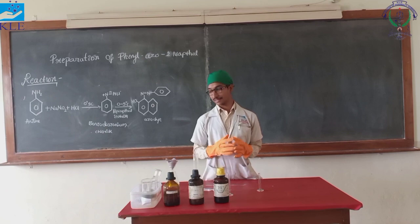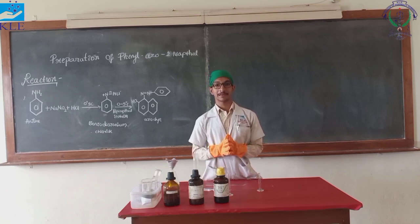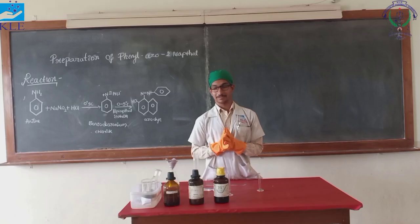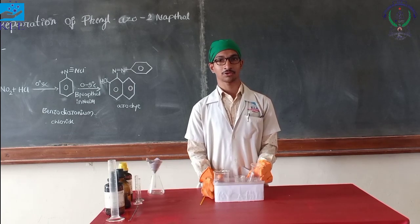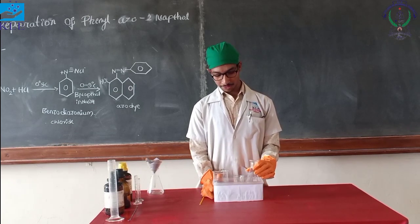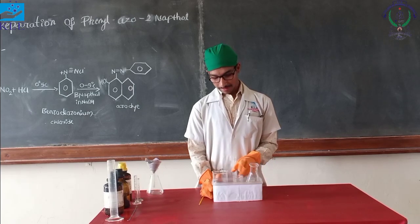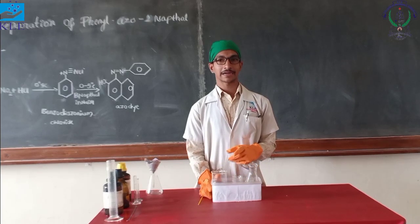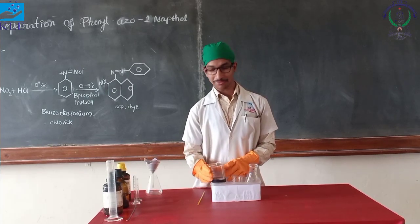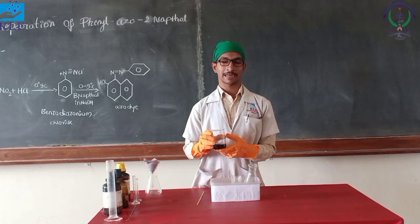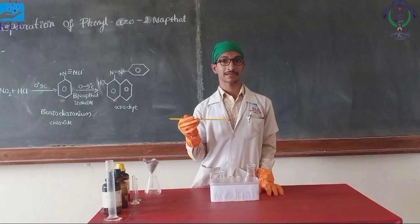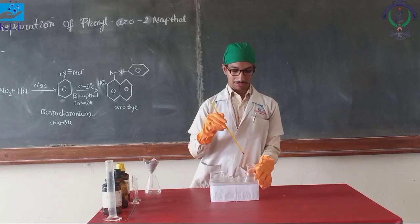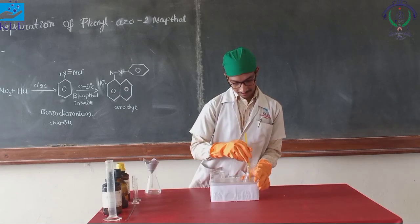As it is an exothermic reaction, care should be taken that the temperature is maintained in the range of 0 to 5 degrees Celsius before starting the reaction. This is the ice bath. I have kept all 3 containers in it: the first is the conical flask containing aniline and hydrochloric acid, also referred to as the anilinium chloride solution; the second is the beaker containing sodium nitrite solution; and the third is beta naphthol in 10% NaOH solution. Monitor the temperature with the help of a thermometer — it should be between 0 to 5 degrees Celsius only.